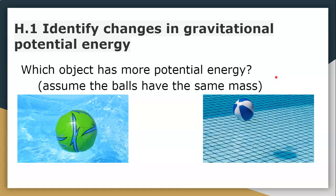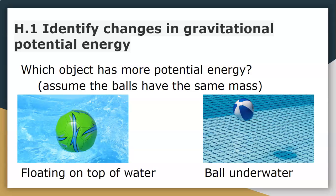Looking at these two pictures, which object has more potential energy? Let's assume that the balls have the same mass. So, this one's on top of the water, and this one is under the water. Because this object is actually floating on top of the water, the distance between this object and the center of the Earth would be greater than this one. So, in this particular instance, this object will actually have greater potential energy.